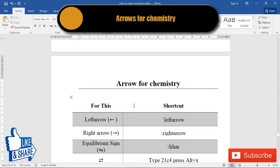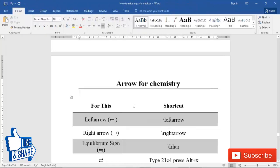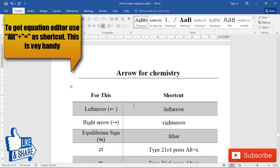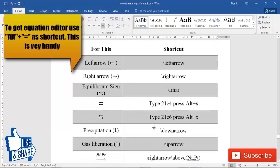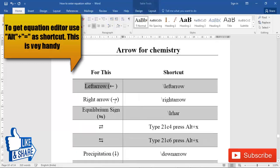If you are into chemistry, then you require a lot of arrows and other things. For getting arrows, there are special shortcuts. For getting left arrow, the shortcut is backslash left arrow.